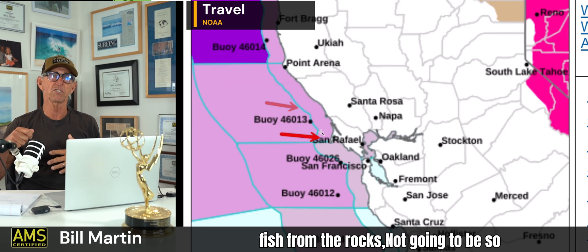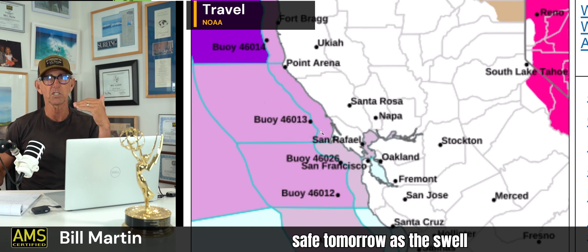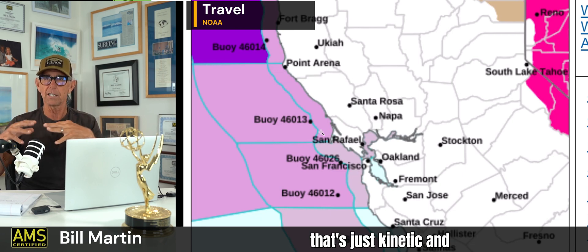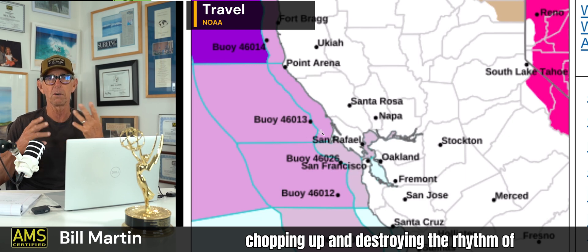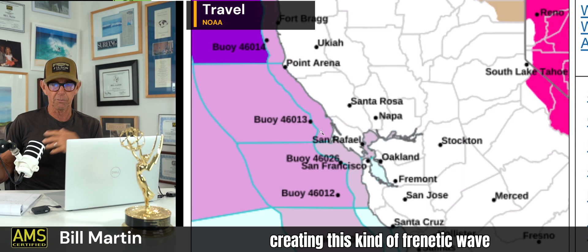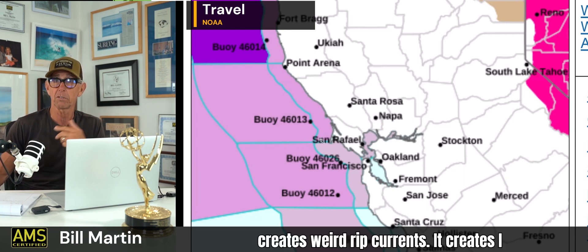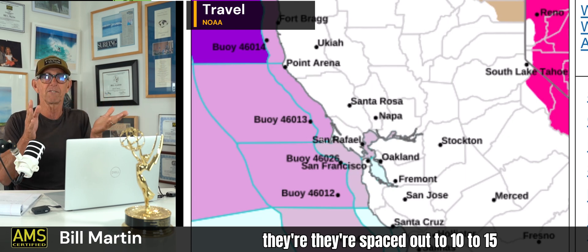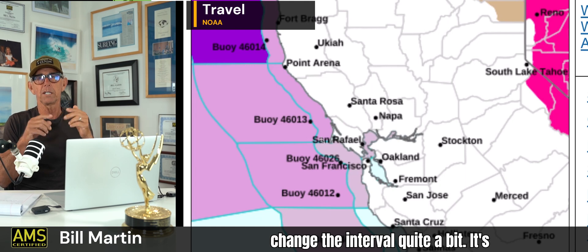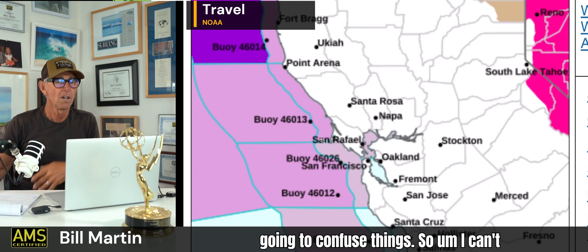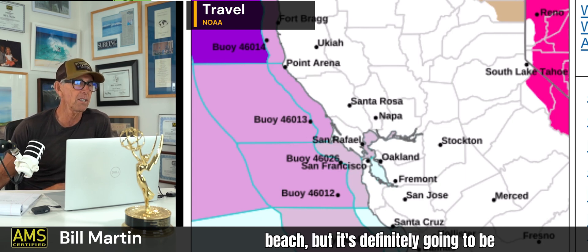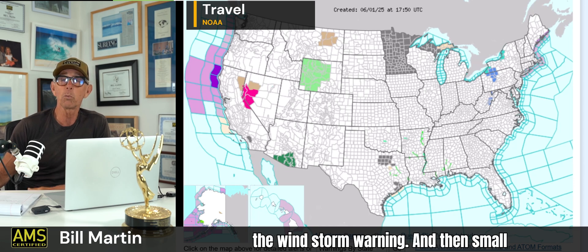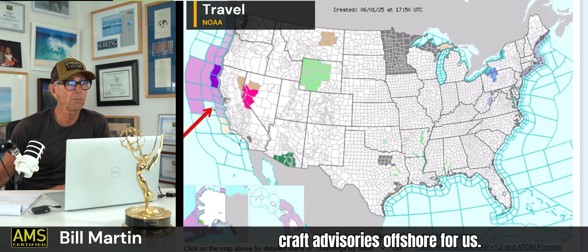So where you used to go and fish from the rocks — not going to be so safe tomorrow as the swell increases. The swell's coming up to around six to eight feet, not huge but big. And then you've got this wind offshore that's just kinetic, chopping up and destroying the rhythm of the ocean, creating this kind of frenetic wave pattern, which is dangerous because it creates weird rip currents. The waves are coming in — normally, a good surf day, they're spaced out to 10 to 15 second intervals. That wind is going to press these waves together, confuse things. So it's definitely going to be chunky and ragged.